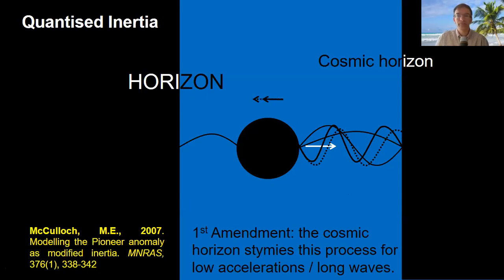But this isn't the entire story. There's also a cosmic horizon shown here by the line on the right. If accelerations become very low, then Unruh waves become very long. Then they start being damped by the cosmic horizon as well, and that damps them all the way around the object symmetrically. So there's less of an imbalance between the right and left sides of the object, and this inertial mechanism collapses.